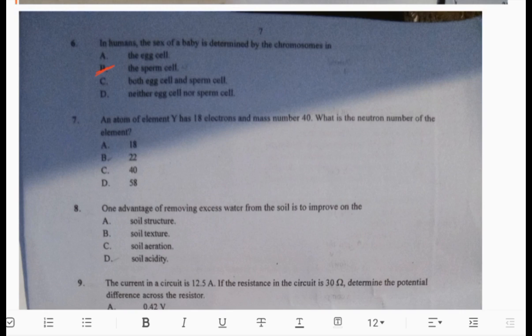An atom of element Y has 18 electrons and mass number 40. What's the neutron number? A: 18, B: 22, C: 40, D: 58. The neutron number is 22. The element Y has mass number 40 and electron number equal to proton number of 18. To find the neutron number, subtract the proton number from the mass number. In a neutral atom, number of electrons equals number of protons, so 40 minus 18 gives us 22. The answer is B.